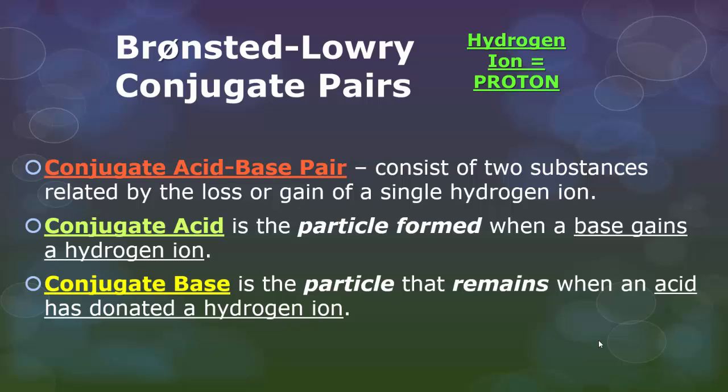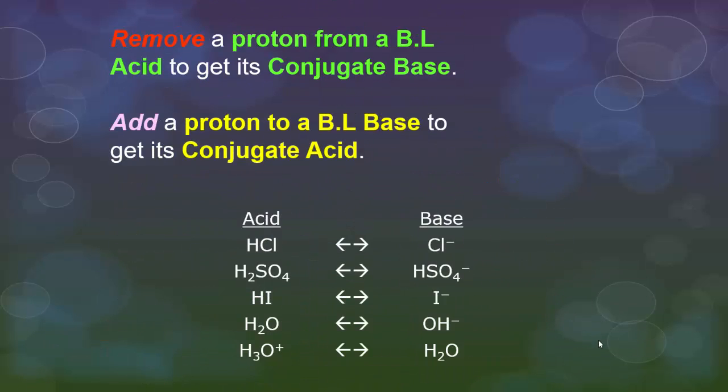We noticed before when we were just identifying who is the Bronsted-Lowry base, who is the Bronsted-Lowry acid, the thing it turns into is its conjugate pair. So a conjugate acid is the particle that is formed, that's the product, when the base gains a hydrogen ion. We also see our conjugate base which is when the particle that remains when the acid donated the hydrogen ion. When you remove a proton from a Bronsted-Lowry acid to get its conjugate base, and then again you're going to add a proton to a Bronsted-Lowry base to get its conjugate acid.